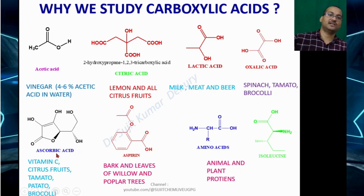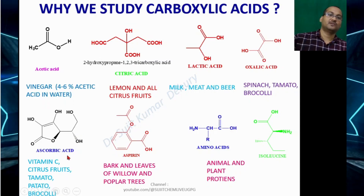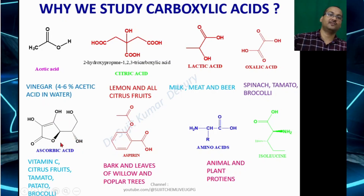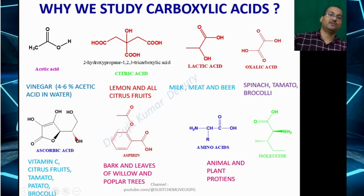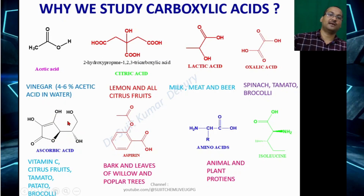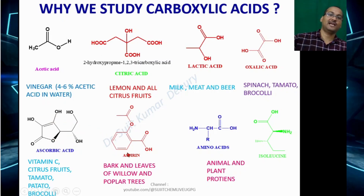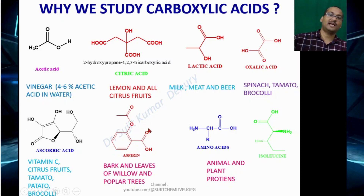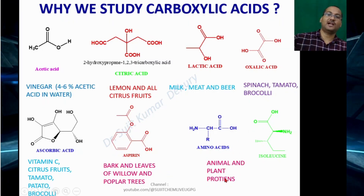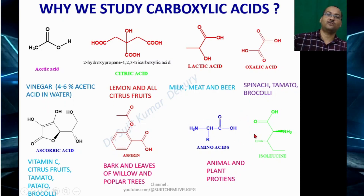Vitamin C, otherwise known as ascorbic acid, is found in citrus fruits, tomato, potato, and broccoli. During the COVID-19 pandemic we used to take vitamin C tablets. Similarly, aspirin has 1 carboxylic acid group and is found in the bark and leaves of willow and poplar trees. Animal and plant proteins contain amino acids; generally 20 amino acids are found.